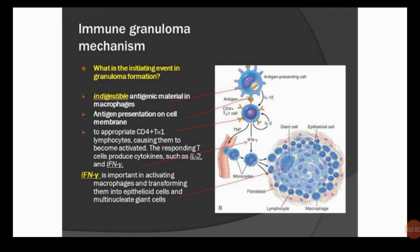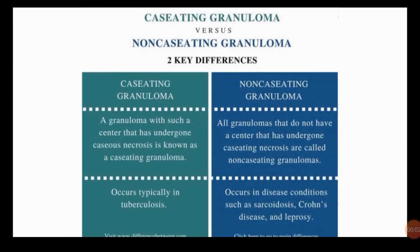The central area of granuloma formation is a necrotic area, and this necrosis might be caseous. In caseous necrosis, the degraded tissue maintains a cheese-like, yellowish appearance. Granuloma may therefore be classified as either caseating granuloma or non-caseating granuloma, and we will discuss the two key differences.